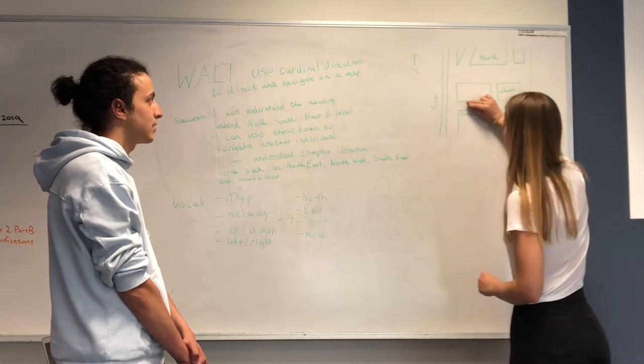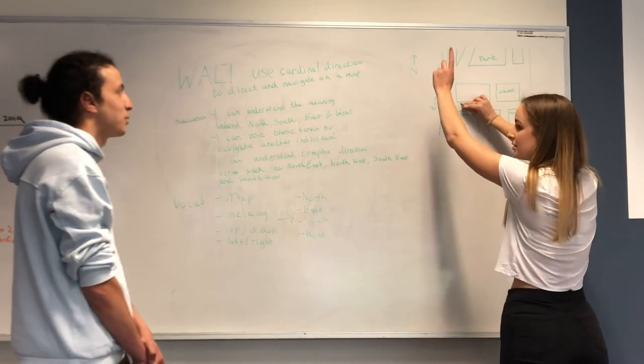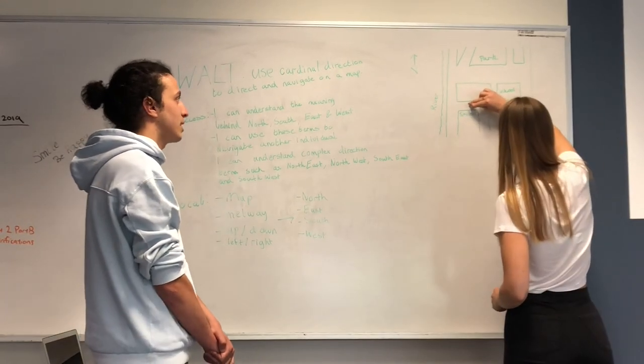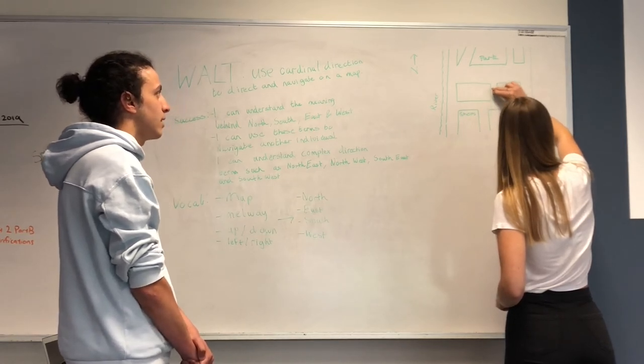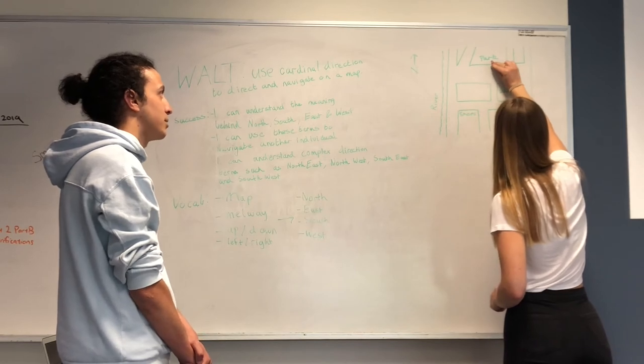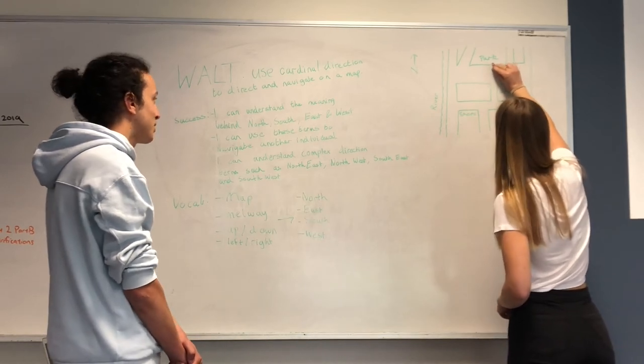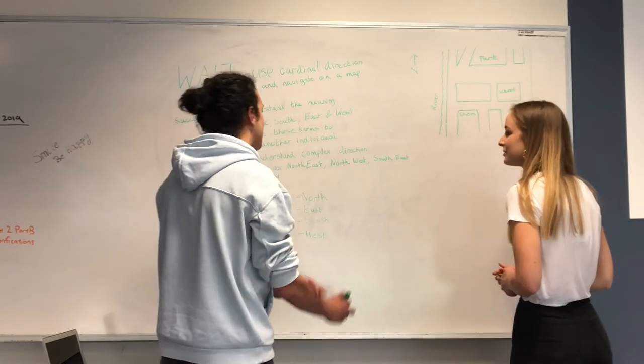And now we're going to be going to the east. The east would still be this way because which way is north? Up. Keep moving east. And now we're going to make the first north move. And we're going to keep going north. And what's our mystery location? The park. So that's the first activity.